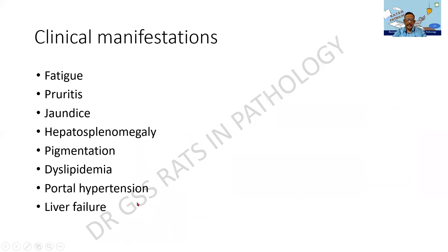These are the clinical manifestations. Pruritus — whenever there is bile stasis there will be pruritus or jaundice. Hepatosplenomegaly initially, but then cirrhosis develops later on. Hyperpigmentation can be there, dyslipidemia with fatty stools and maldigestion, portal hypertension, and ultimately liver failure requiring transplantation.